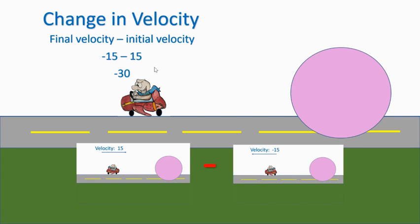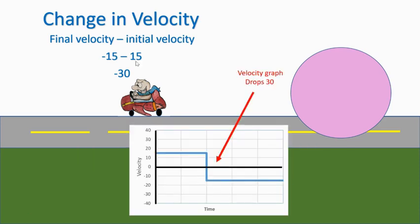When something changes direction — especially going from one direction to the complete opposite — the change in velocity is actually greater than if it just comes to a stop. To bounce back, the object first has to come to a stop and then speed up in the opposite direction, so you get double the change in velocity. His change in velocity was even greater than his speed alone. On the velocity graph you can see a big drop as he goes from a positive velocity down to a negative velocity, dropping by 30.